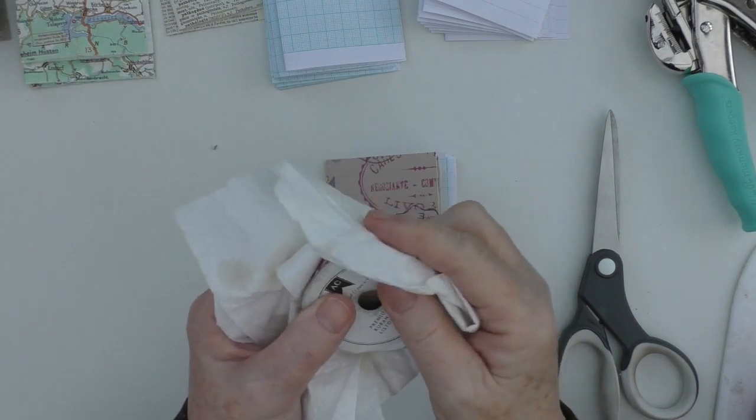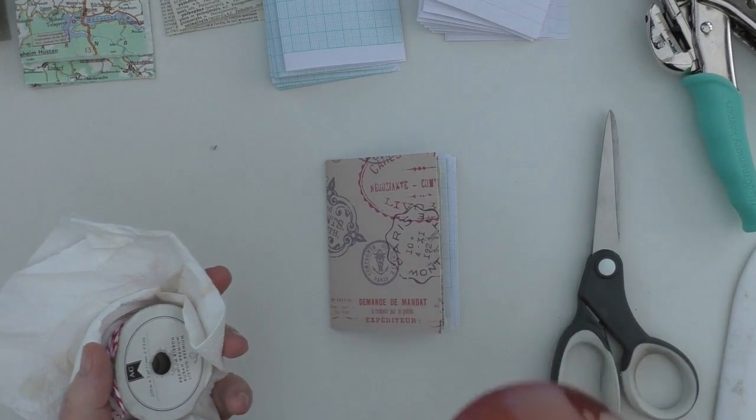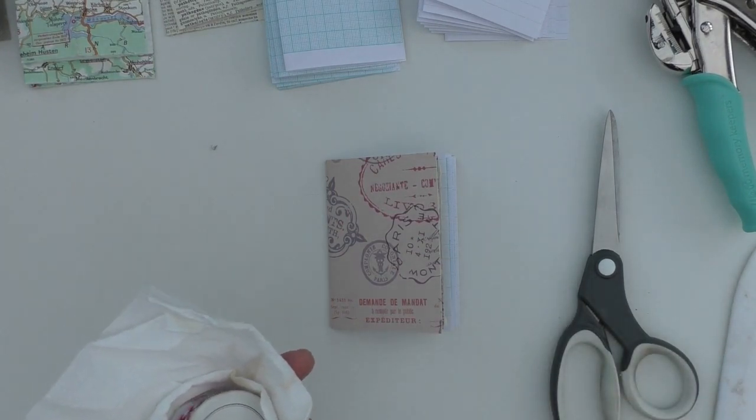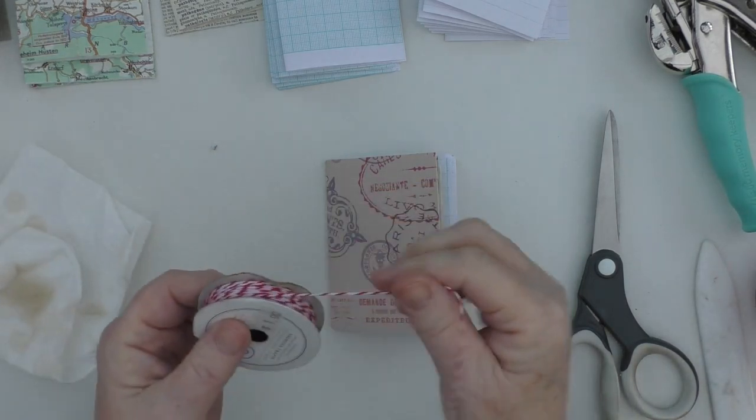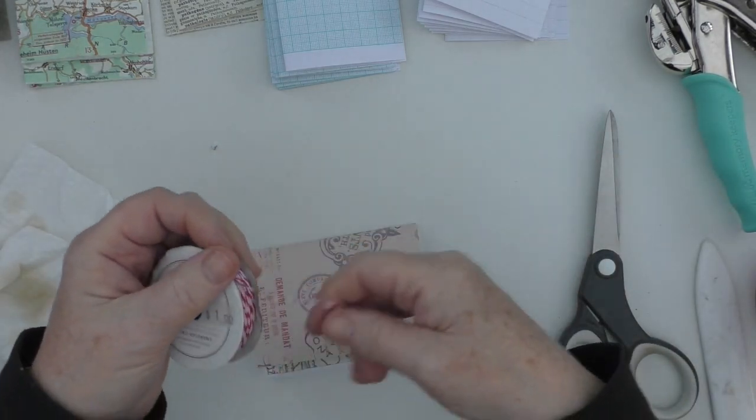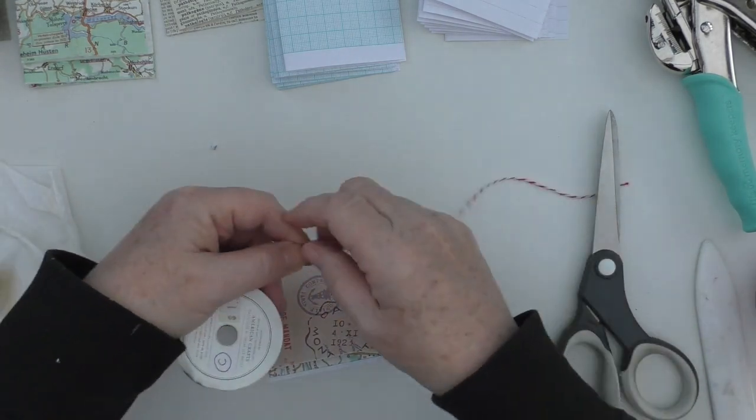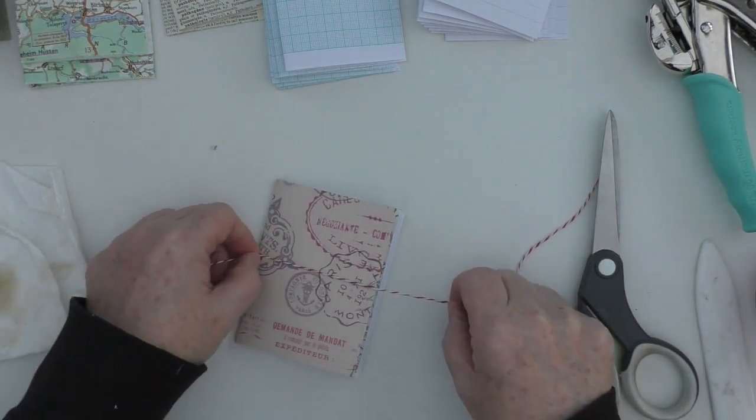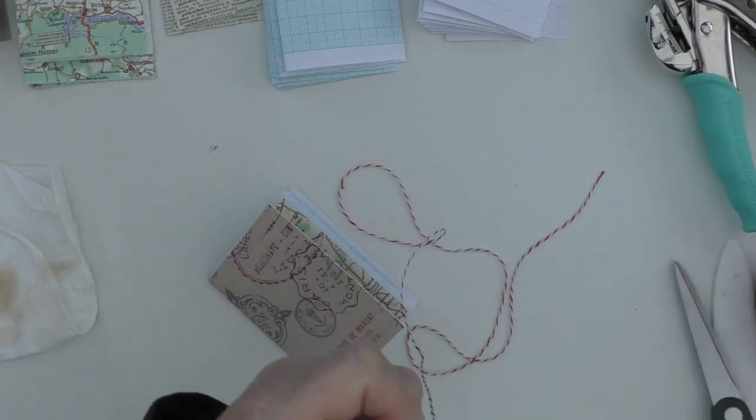So at this point, I am drying off my baker's twine, which I managed to drop in my cup of coffee. So I inadvertently coffee stained it. And I'm just going to measure this out. My rough way of measuring it is to do twice the length and then four times the width. And you'll see I add a bit extra in there.